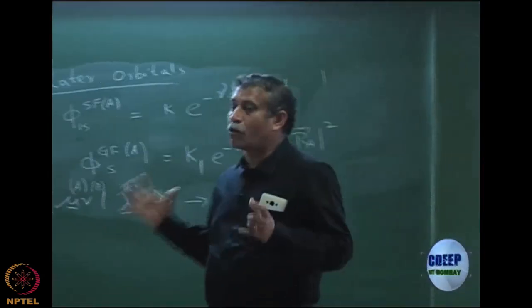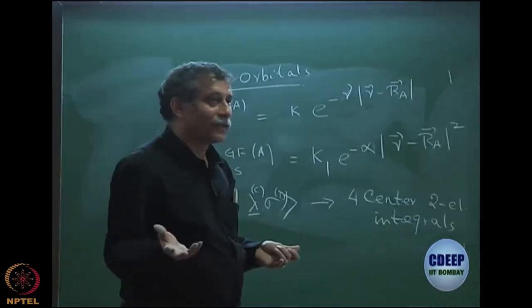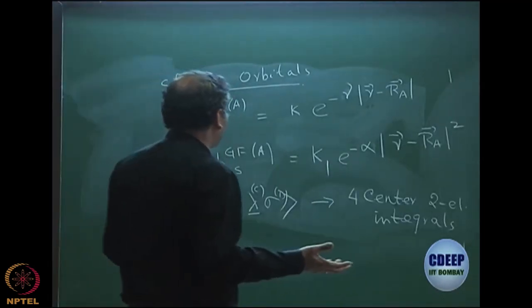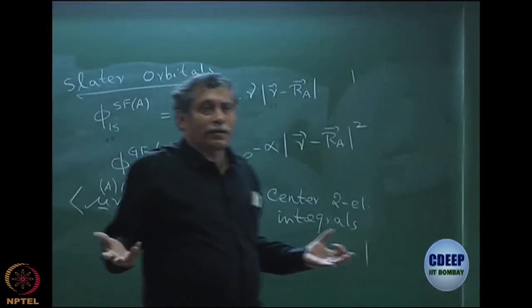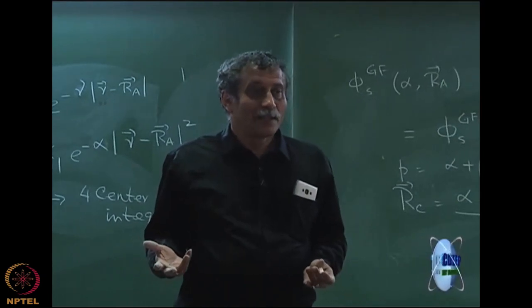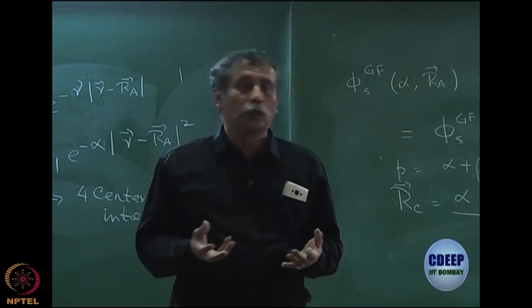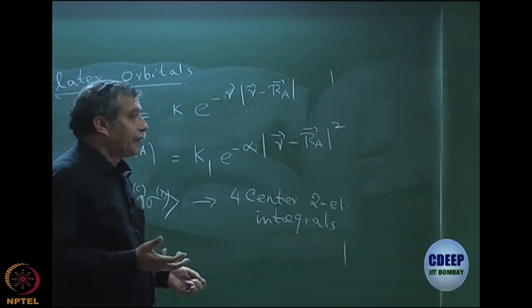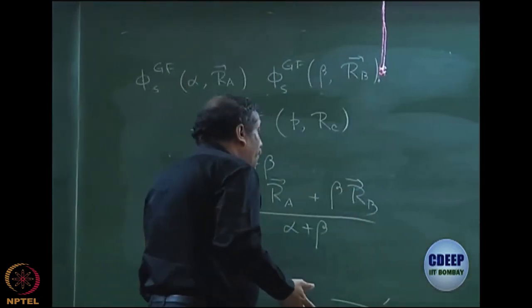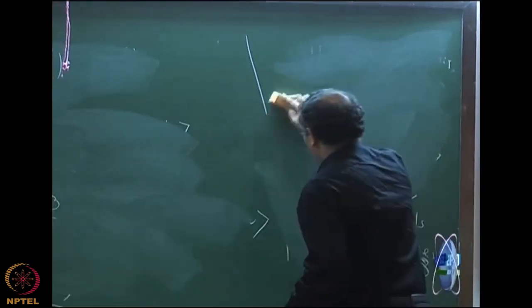That is the reason atomic orbitals have to be used as Gaussians. But the question is: atomic orbitals are not Gaussians — actual atomic orbitals are Slater functions. There are two important differences between Slater and Gaussian functions that we must understand.